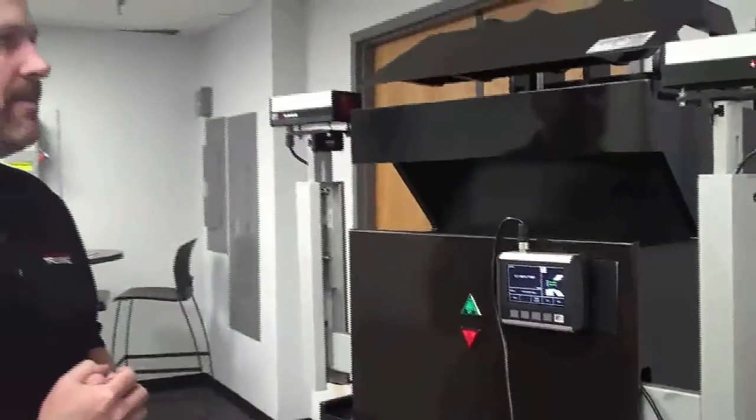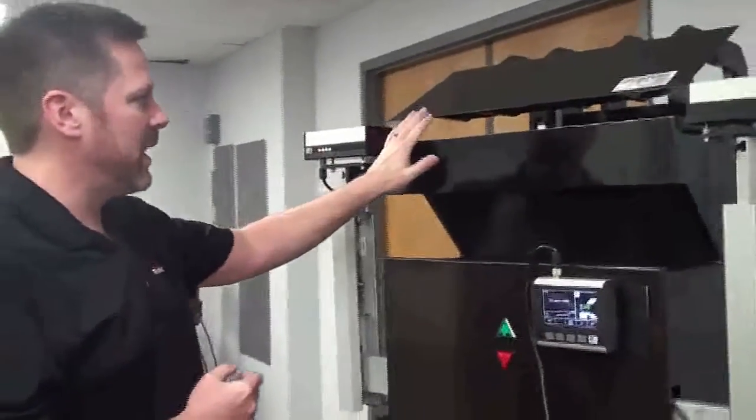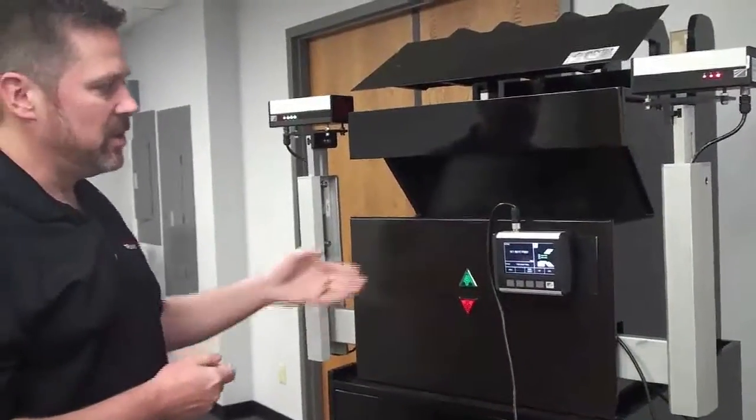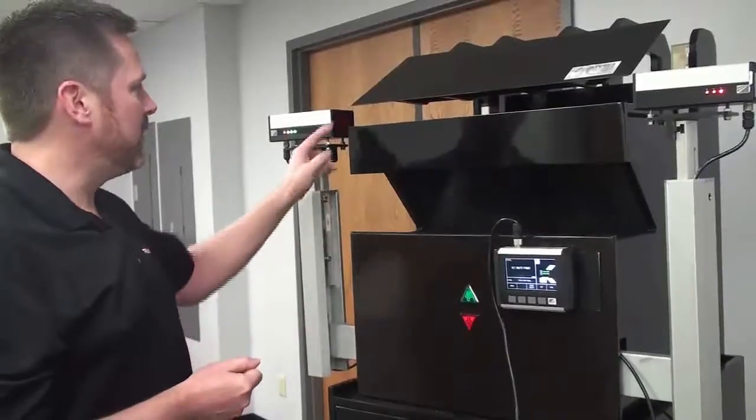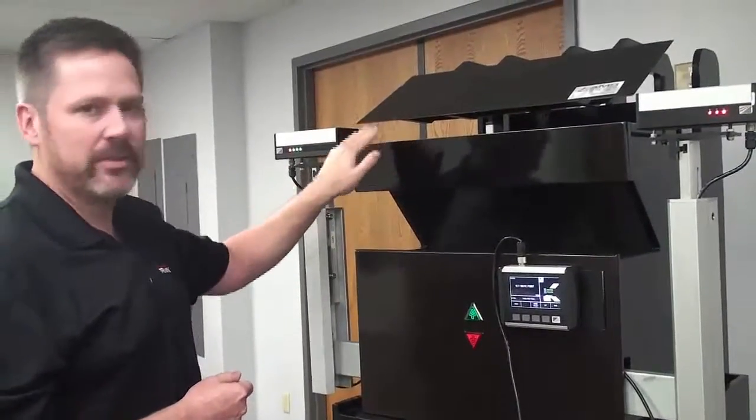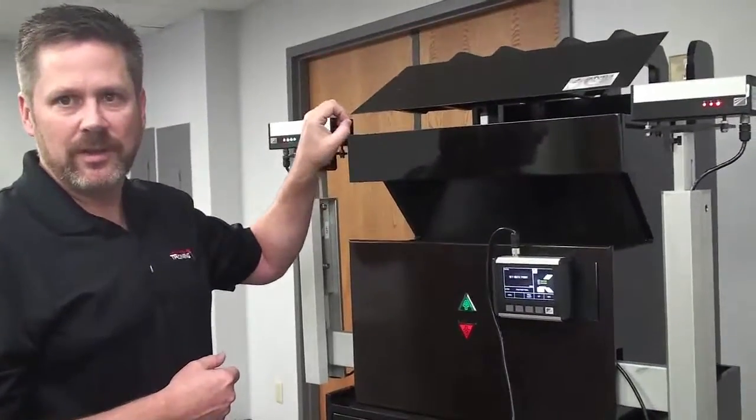What the mute point means is there are certain points in which this clamp is going to interrupt these lasers. The system uses the encoder to determine where these lasers are, so that way it can mute itself, so when the clamp passes through the lasers, it doesn't cause false stoppages.